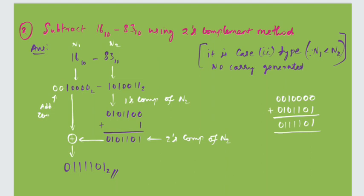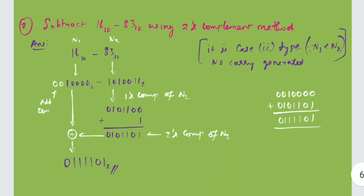After getting the two's complement value of the second number, add it with n1. Note that we are adding zeros to the first number — both numbers should be in equal length before adding. If any number is shorter, we add zeros to make them equal length. After adding, the value we get is 001101101. This is the final answer. For verification, we need to calculate the two's complement value of the answer.